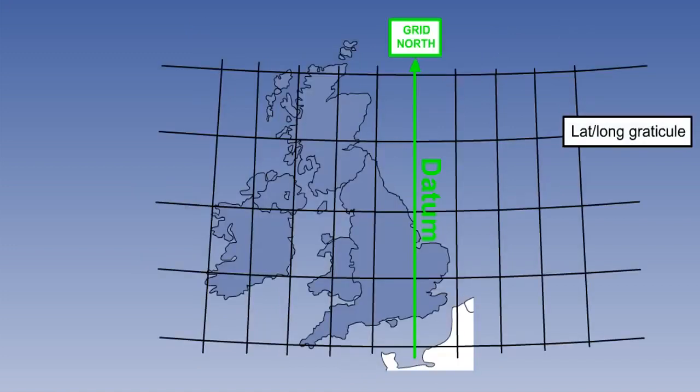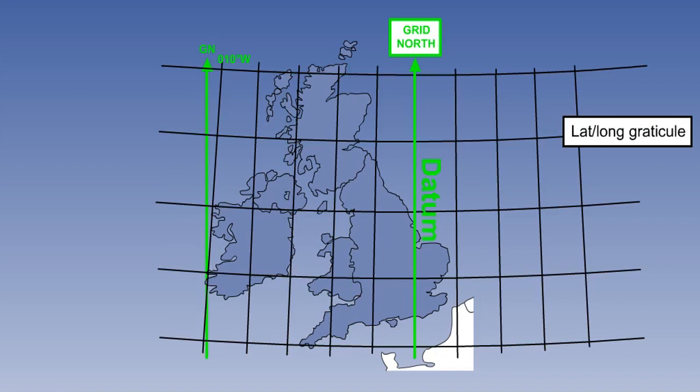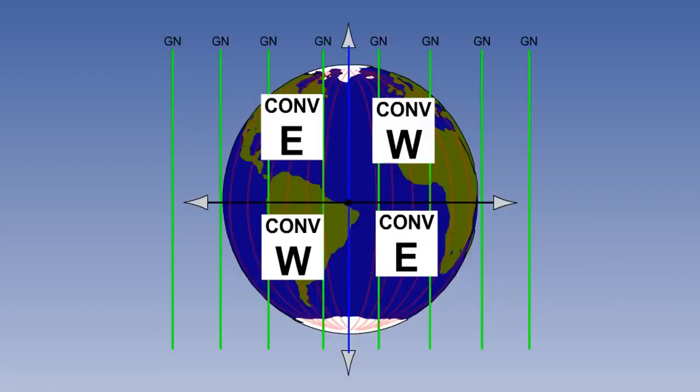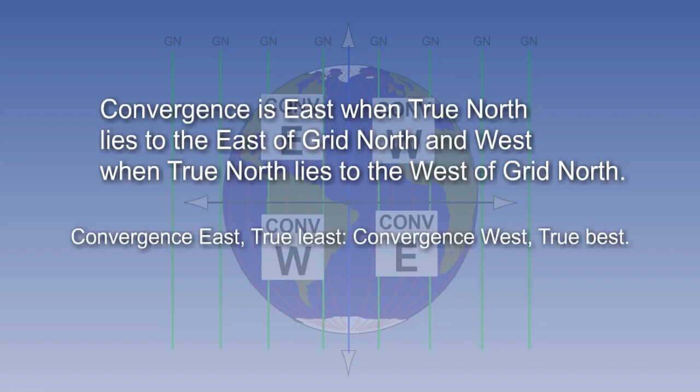We choose one particular meridian as the datum. And from this we define our grid. We showed that our normal definition of chart convergence is also the difference between true and grid north at any point on the chart. So we can calculate the convergence by taking the change of longitude between the datum and any particular longitude on the chart and applying the normal rules, depending on whether it is a polar stereographic or Lambert's chart. Remember the rule EWWE to work out whether the sense of the convergence is east or west. Remember that convergence is east when true north lies to the east of grid north, and west when true north lies to the west of grid north. And remember, convergence east, true least, convergence west, true best.